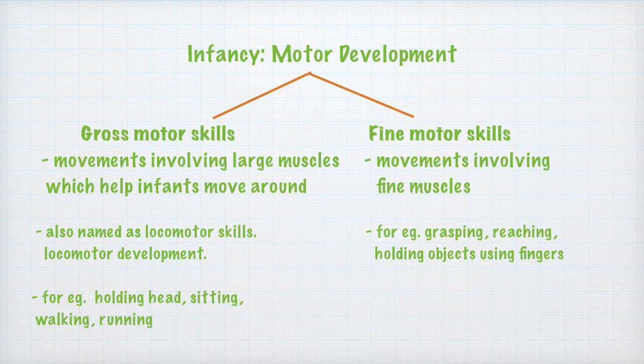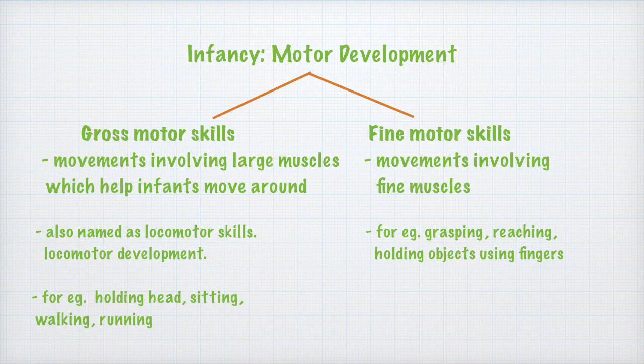Infant motor development involves two kinds of skills. One is known as gross motor skills and the other is fine motor skills. Gross motor skills are those skills which involve movements using large muscles — for example, holding the head, sitting, walking, and running. These skills help the infant make large movements in the environment and are also known as locomotor skills because they help the infant move from one place to another with the whole body.